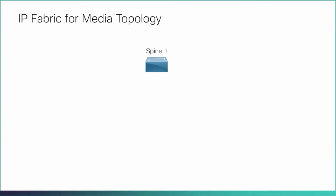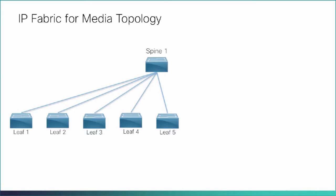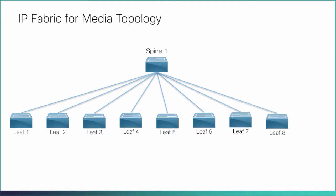In the first release, Cisco's IP fabric supports a single Cisco Nexus 9000 series spine switch and multiple leaf switches. You can expand the fabric to support more endpoints simply by adding another leaf switch, up to a total of nine.